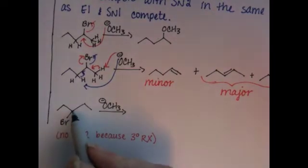Looking again, what we do with elimination is abstract a hydrogen from a carbon adjacent to the carbon holding the leaving group. Here's the carbon with the leaving group. Here's an adjacent carbon.